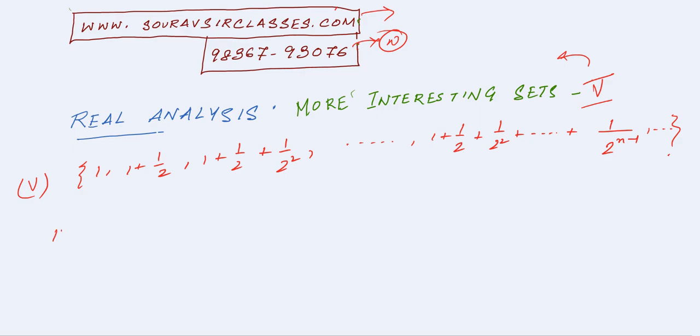Here we have 1 + ½ + ½² + ... + 1/2^(n-1). This is a GP, so using the formula: 1 × (½)^n / (1 - ½), which is actually equal to 2(1 - 1/2^n).